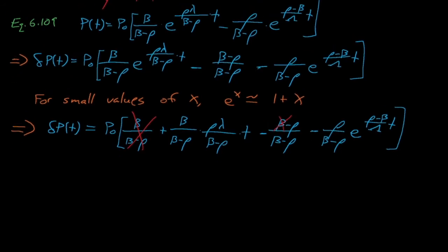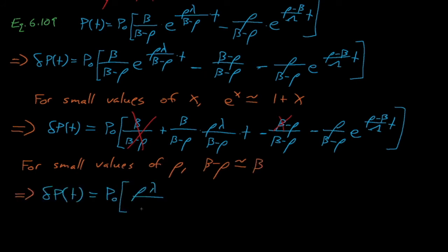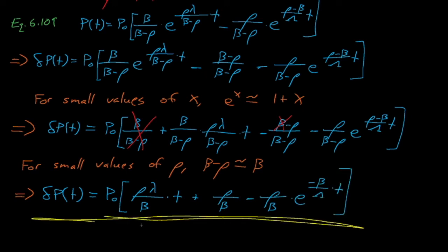We use this approximation to decompose the first exponential term into two approximate terms, one of which cancels with the negative beta divided by beta minus rho term. Next, because we're given that our reactivity insertion is very small, we approximate beta minus rho as just beta. After doing all this, we see that delta p of t is roughly equal to p0 times rho times lambda divided by beta times t plus rho divided by beta minus rho divided by beta times e to the negative beta divided by lambda times t.